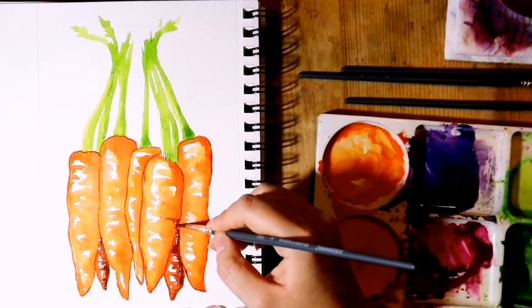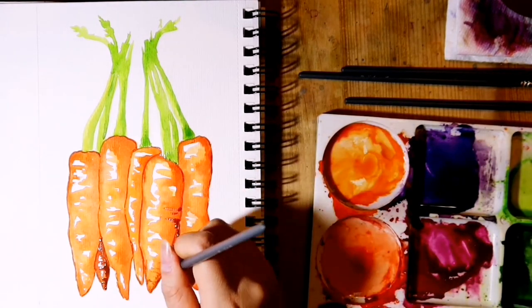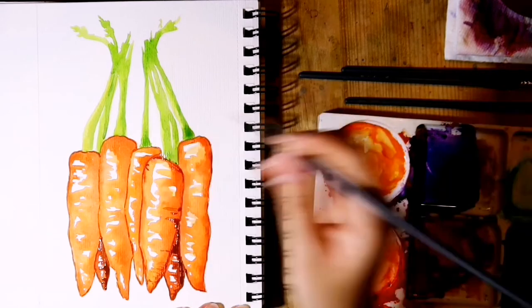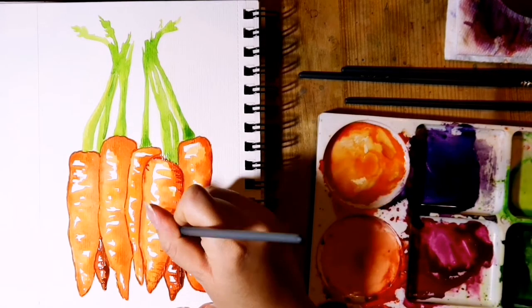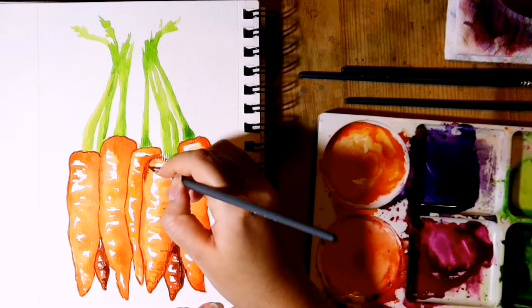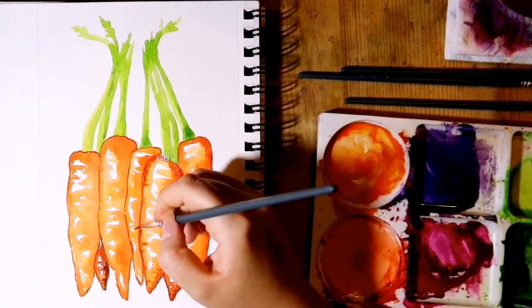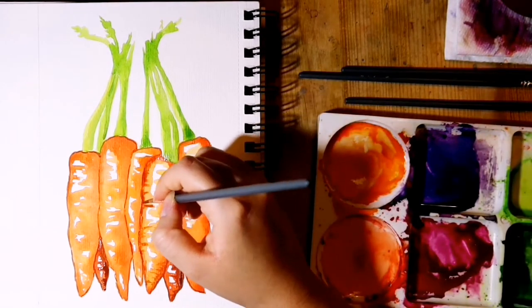Then I added some shadows to the ridges of the carrots on the right side where there would be the most shadows. If you don't want to make the shadows very harsh, you can always dilute the pigment by having a wet brush and dipping it into your pigment.